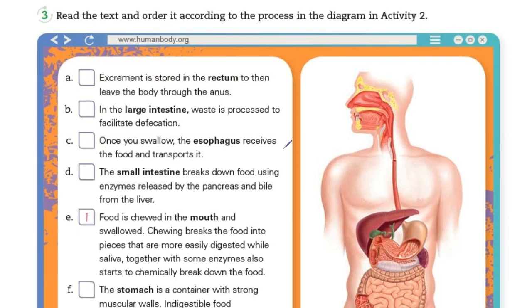Activity number three: read it and order it according to the process in the diagram in activity two.